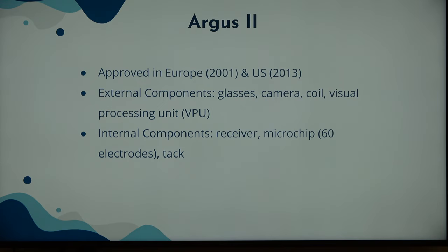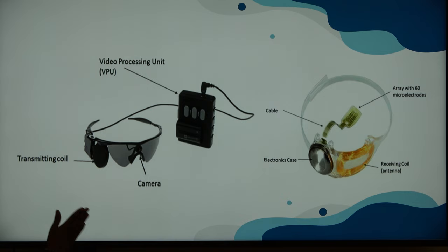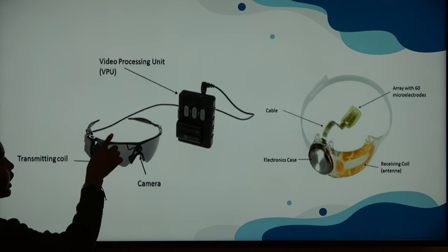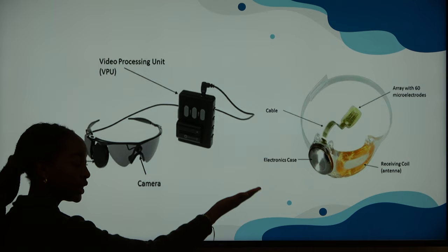Here is a photo of everything. This is the camera — it's a little bulky, but it's functioning — mounted onto the glasses. That is the coil that connects to the visual processing unit. And then internally, this is the eye implant, what actually goes inside your eye — that's the microchip and that's the receiver.